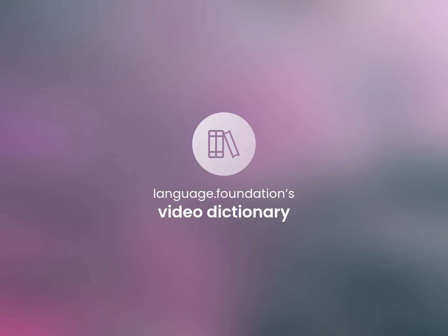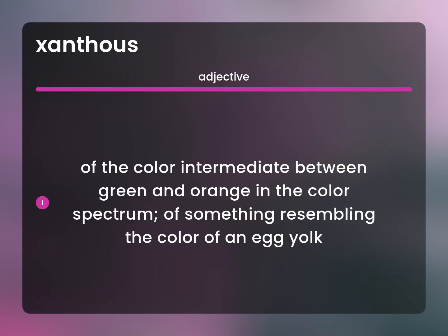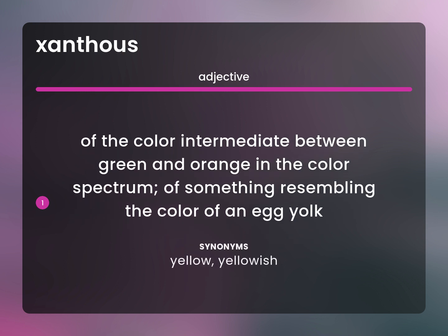Language.Foundation's Video Dictionary, helping you achieve understanding of the color intermediate between green and orange in the color spectrum, of something resembling the color of an egg yolk. Yellow, yellowish.